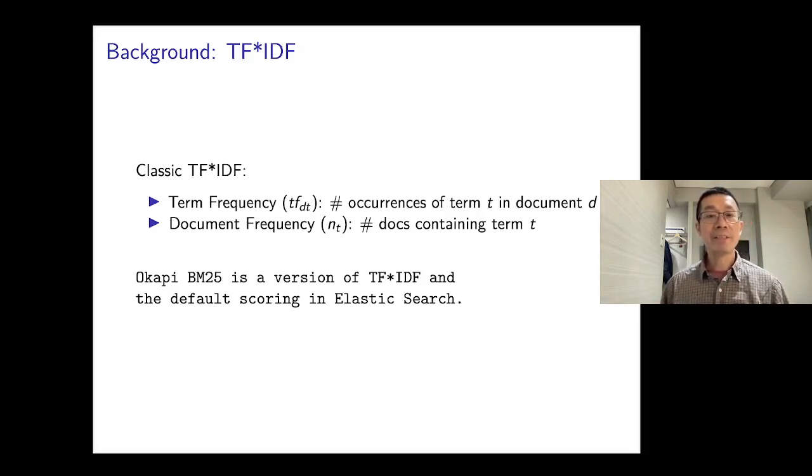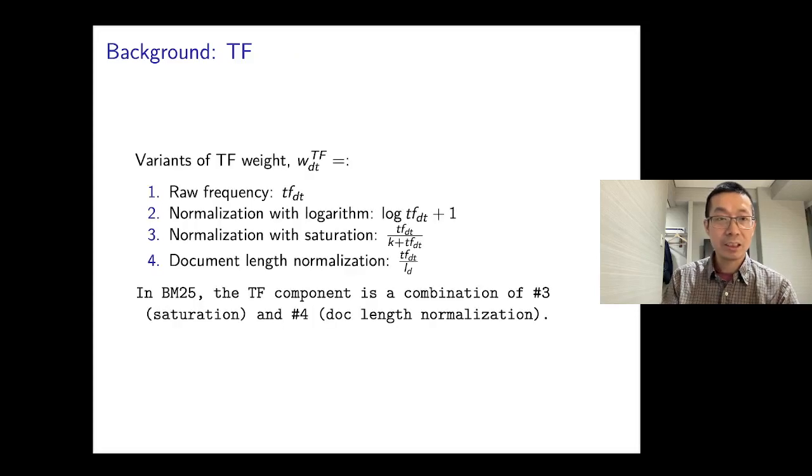Okapi BM25 is a version of TFIDF, which is very competitive. It is actually the default scoring function in Elasticsearch, the number one open source search engine.